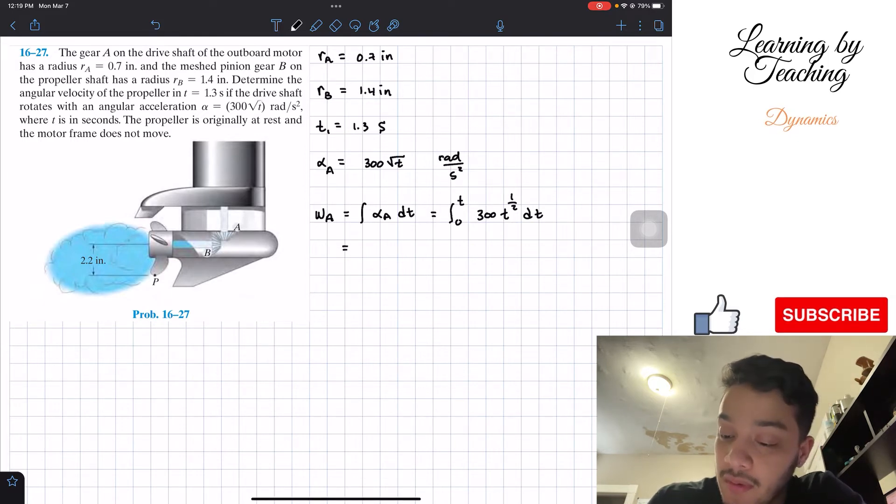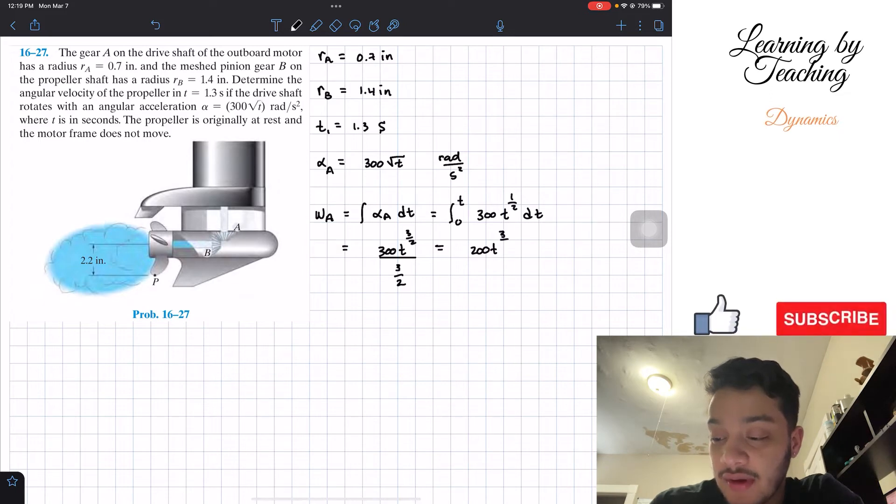So if we solve for that integral, we'll end up having 300t to the 3 halves, all divided by 3 halves. We can further simplify that, and we will get an equal of 200t to the 3 halves.